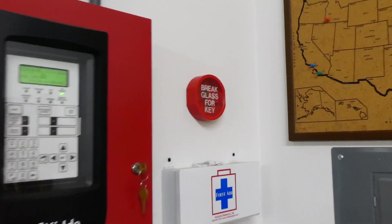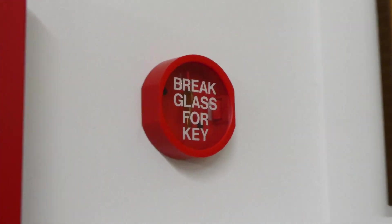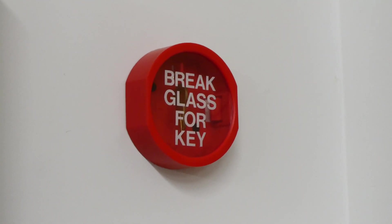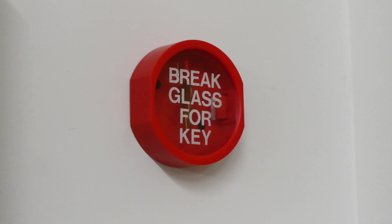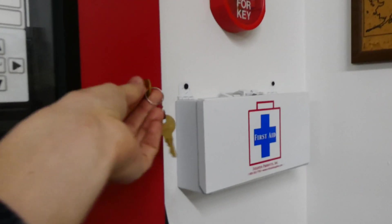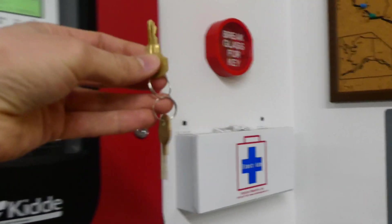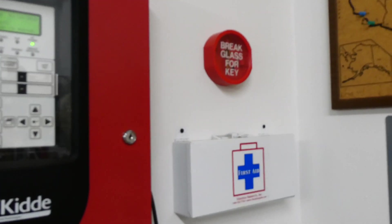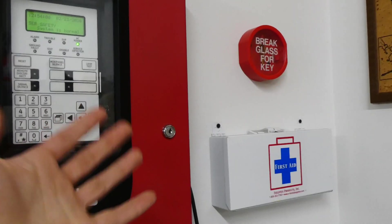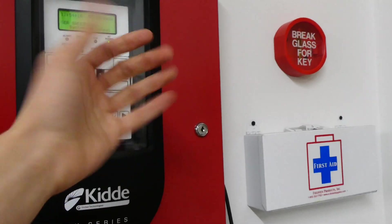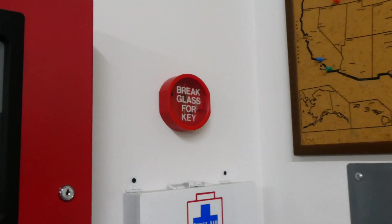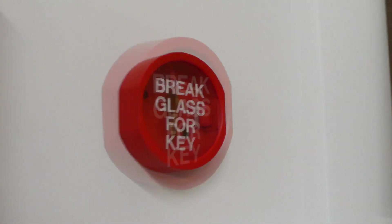Over here by the fire alarm control panel we have a Safety Technologies International break glass for key concealment container. And all this does is hold a spare set of keys. So today we're going to pretend that my normal set of keys, I lost it. And then we're going to simulate a fire alarm situation where I need to get my keys in order to access the fire alarm control panel. But remember I lost my normal pair of keys. So we'll be breaking the glass to get my spare set today.